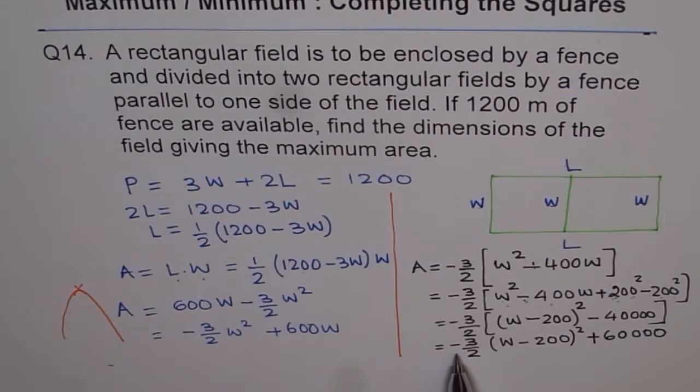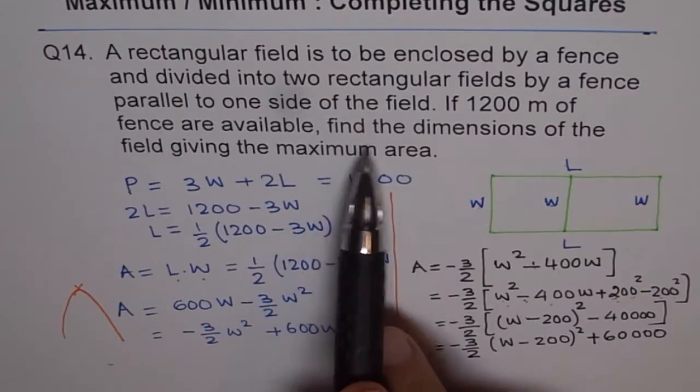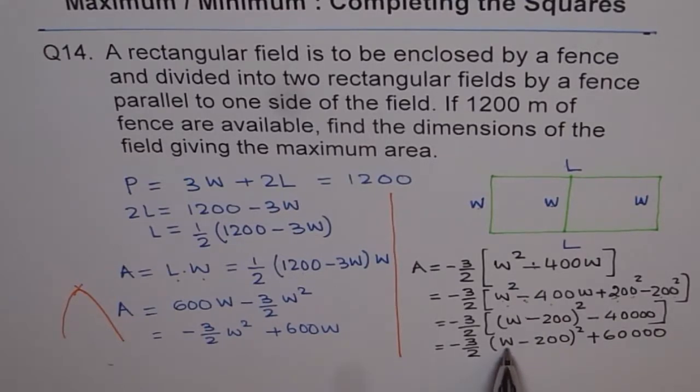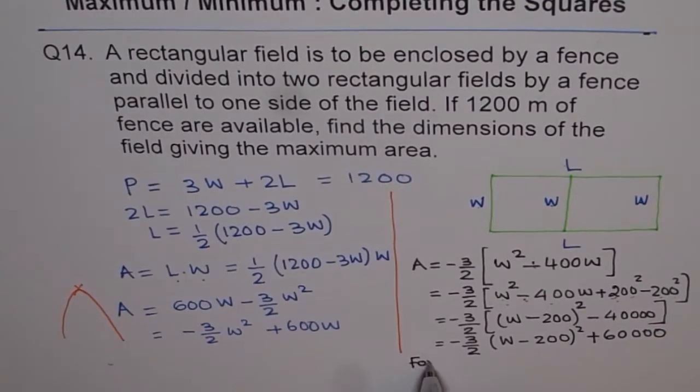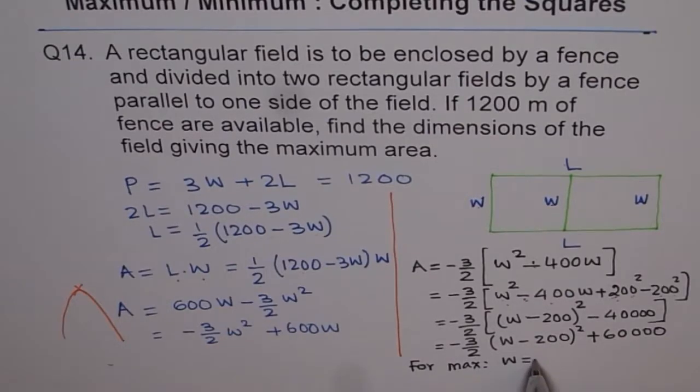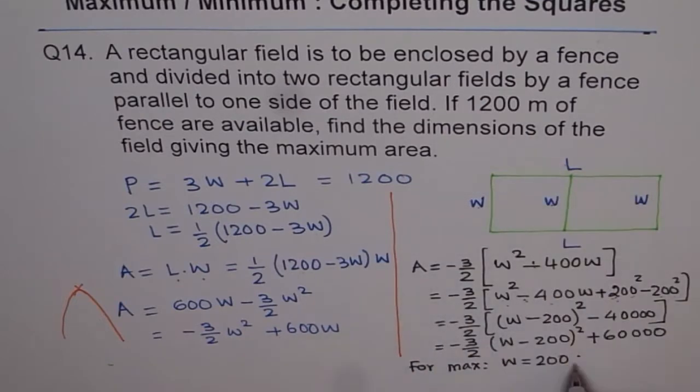Since we have a leading coefficient of minus, it is a parabola which opens downwards and therefore there is a maximum. So maximum area is how much? Maximum area is 60,000, right? Well, we need to find dimensions of the field giving maximum area. Dimensions means width and length. So from this equation, we can say width is 200. So for maximum, width equals 200, right? And the units are meters, correct? We like 200 meters. And how about length?